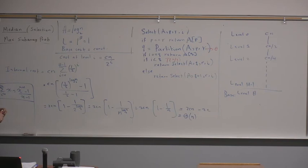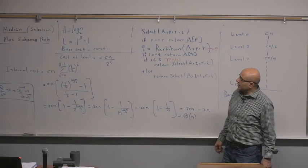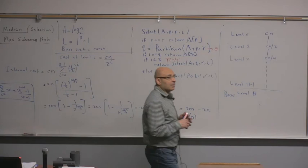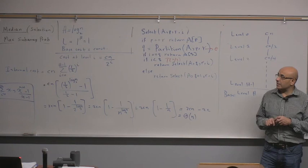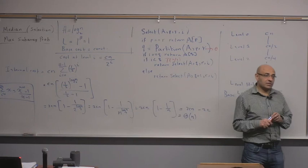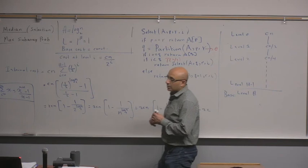Any questions? So this is our analysis of the median algorithm. We expect this algorithm to run in Θ(n) time in most cases — it's a linear-time algorithm. There is still theoretically a quadratic worst case, but it's extremely unlikely, just like quicksort's worst case. Any questions before we move to the next topic?